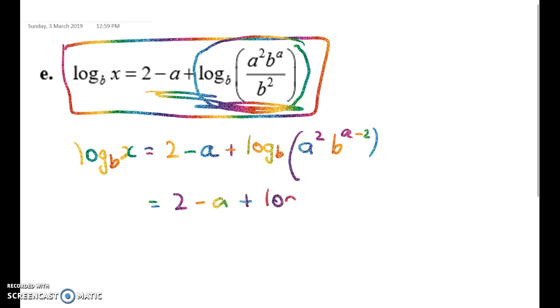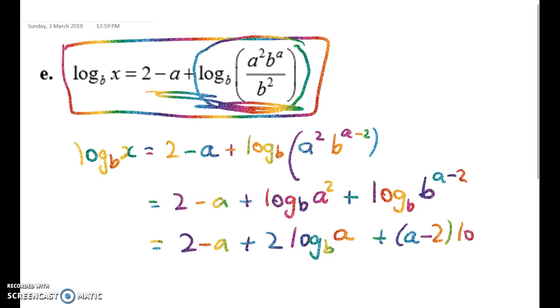Now I'm going to use my power rules and my product rule. So first I'm going to split it into two logs. I've got the log to base b of a squared plus the log to base b of b to the a minus 2, which gives me 2 minus a plus 2 log b.